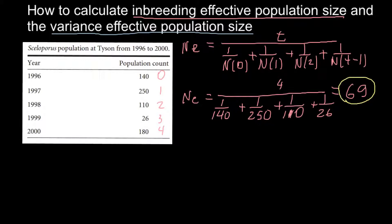If you think that we can solve this problem much easier by just adding all these numbers and dividing by 5, this would be a totally different number. If we add all these numbers and divide by 5 to find the mean, this is going to be about 141 individuals.